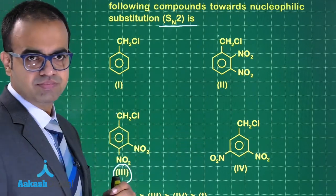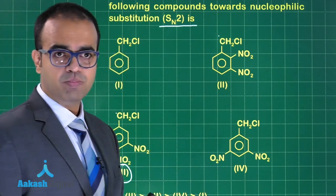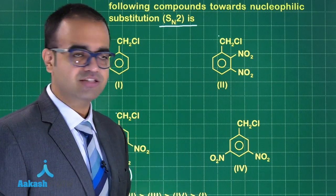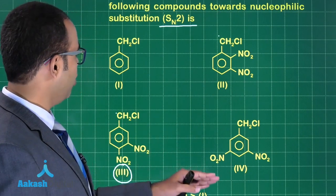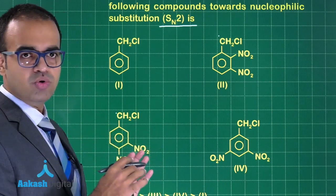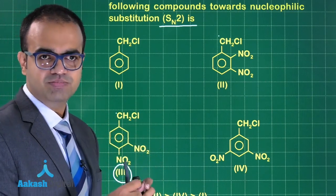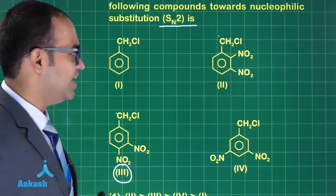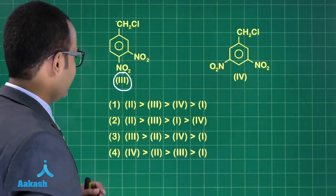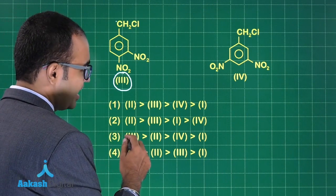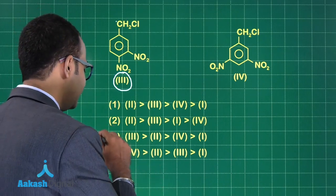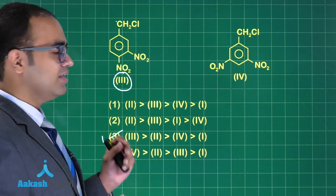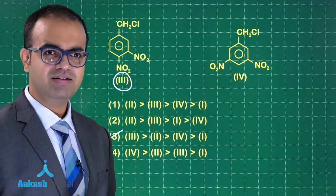Comparing compound 4 and compound 1: compound 4 has a NO2 group which will facilitate the SN2 mechanism, so compound 4 will be faster than compound 1. Overall: the fastest to undergo SN2 is compound 3, and the slowest is compound 1. Looking at option 3, compound 3 is maximum and compound 1 is minimum — so the answer is option 3. This is an important but moderate level question from halogen derivatives of alkanes.